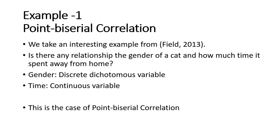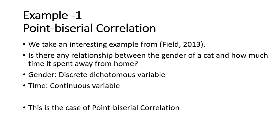Now we take example number one for point biserial correlation. This is an interesting example from Andy Field's book (2013). The research question is: is there any relationship between the gender of a cat and how much time it spent away from home? Here, gender is a discrete dichotomous variable while time is a continuous variable, so this is a case of point biserial correlation.